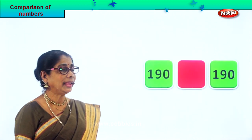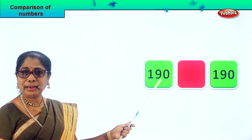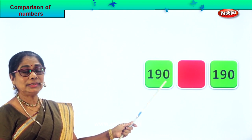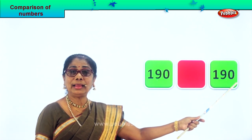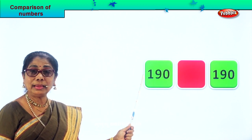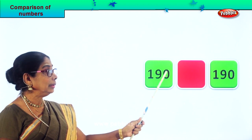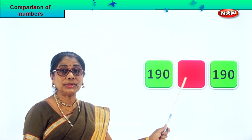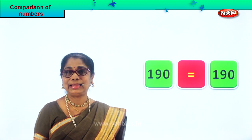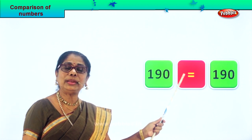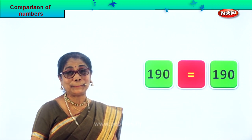Let's take another set of numbers. In both boxes we have 190 and 190. So we say 190 is equal to 190. We put the equal sign — both numbers are the same. Good.